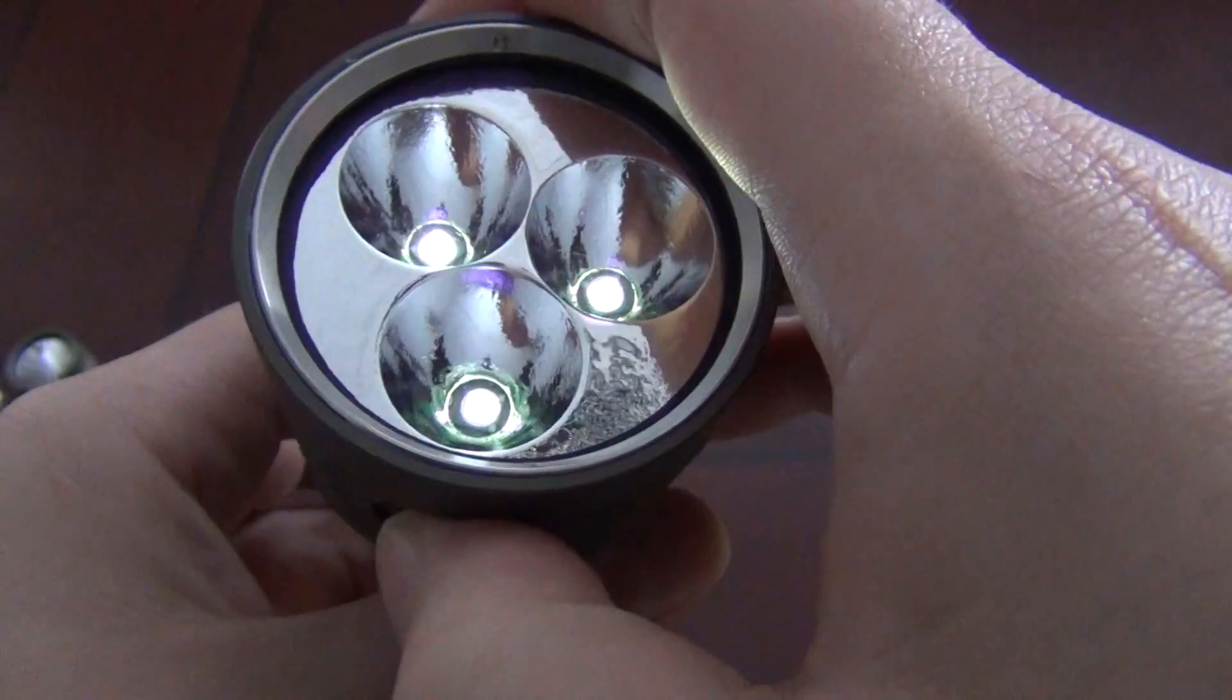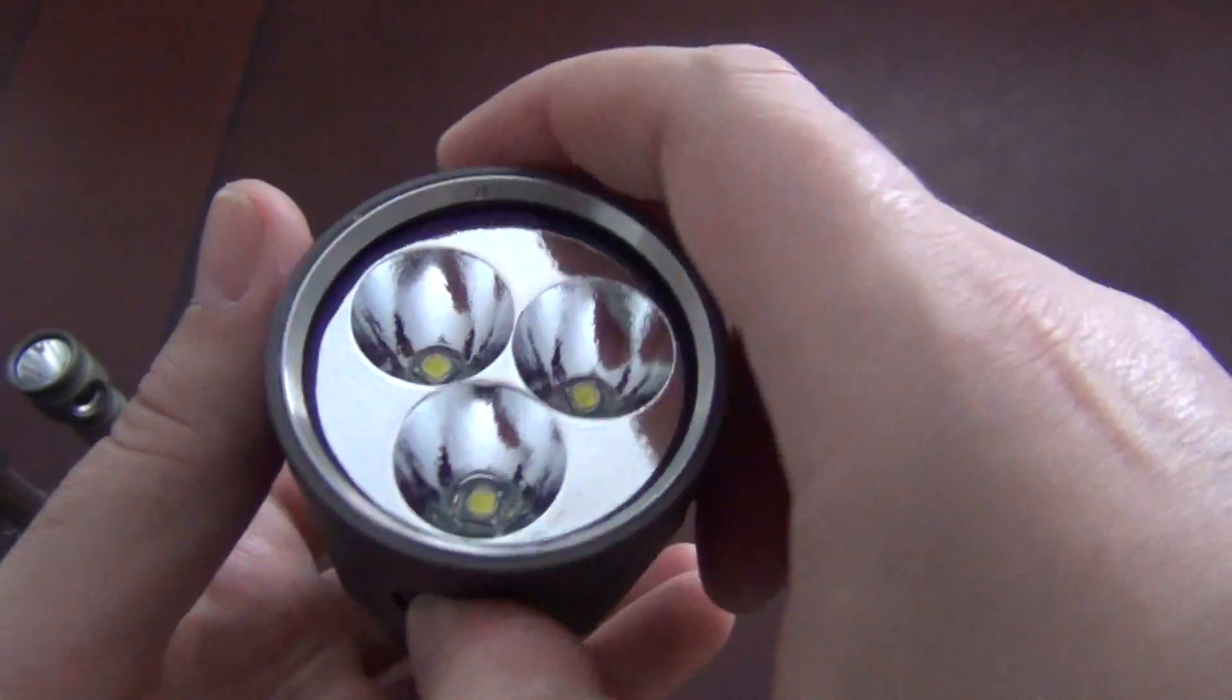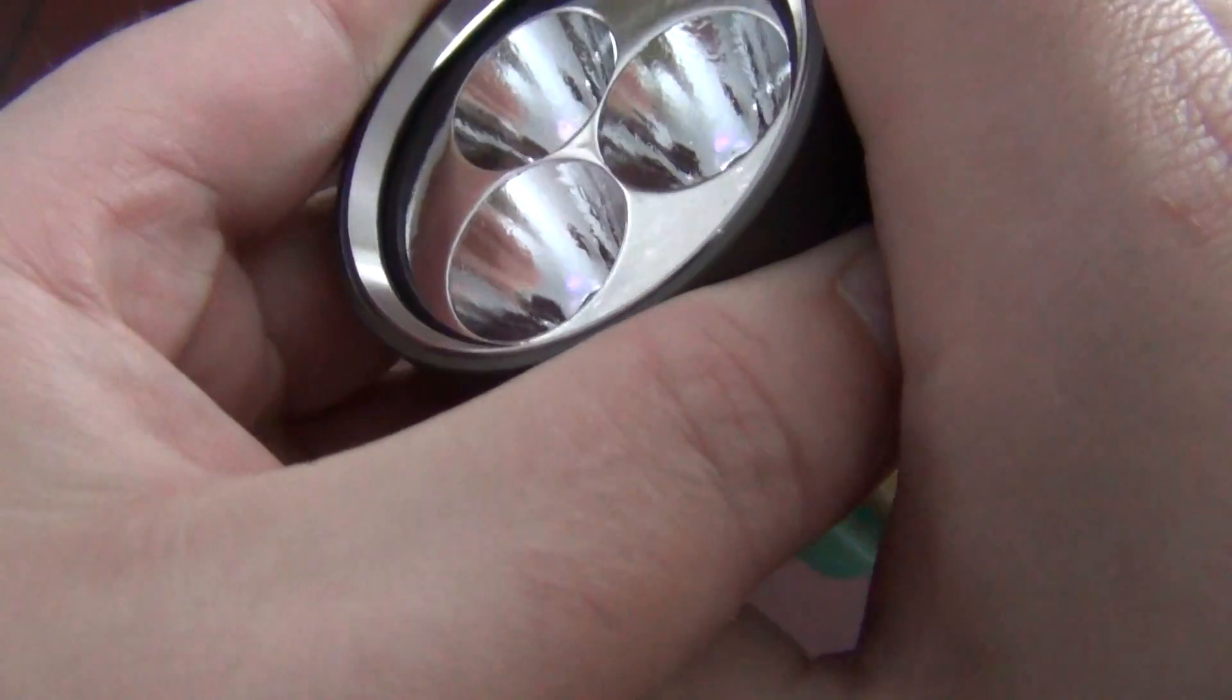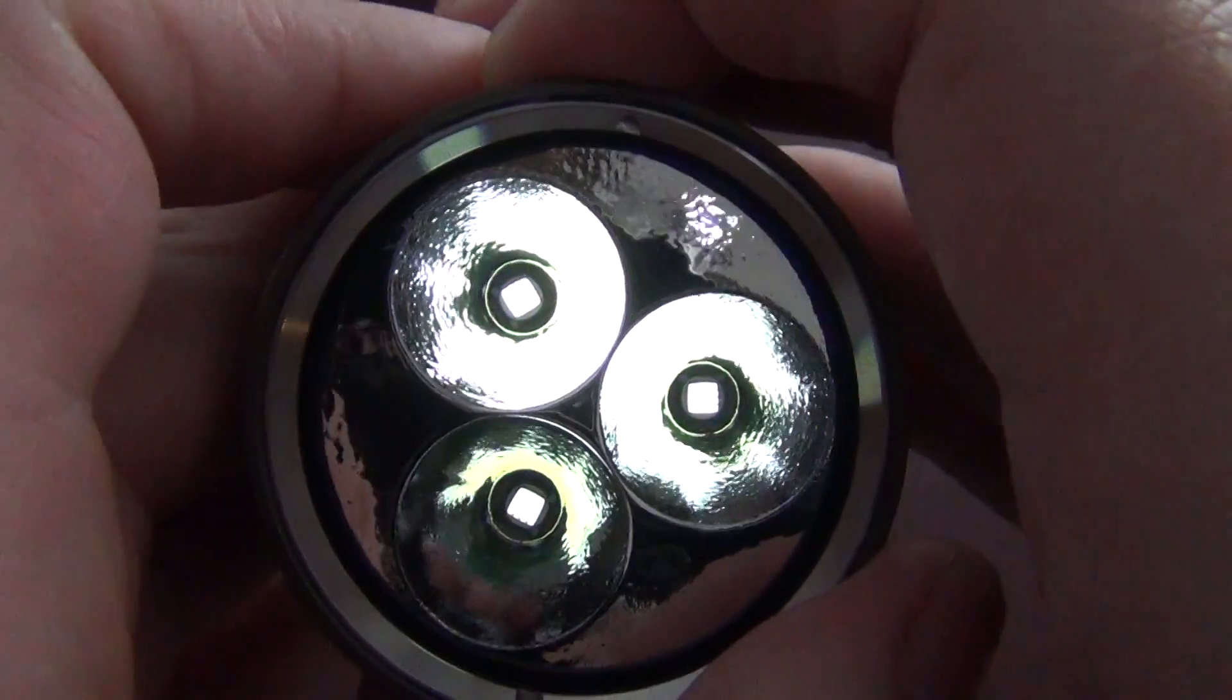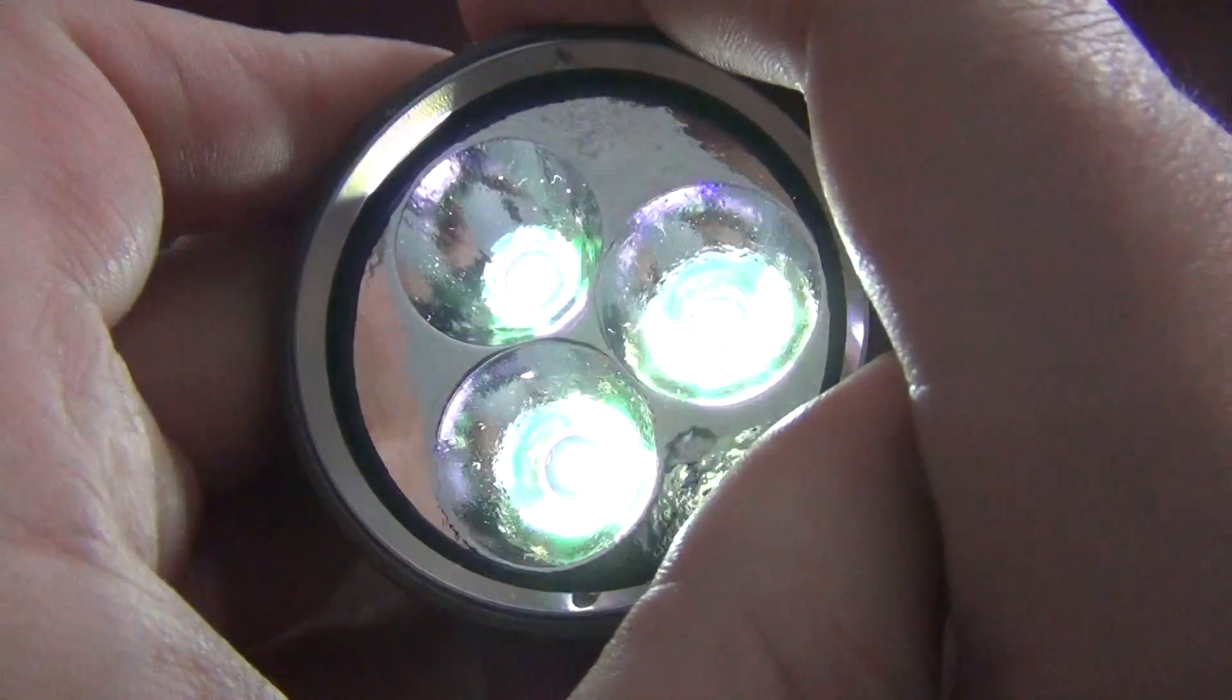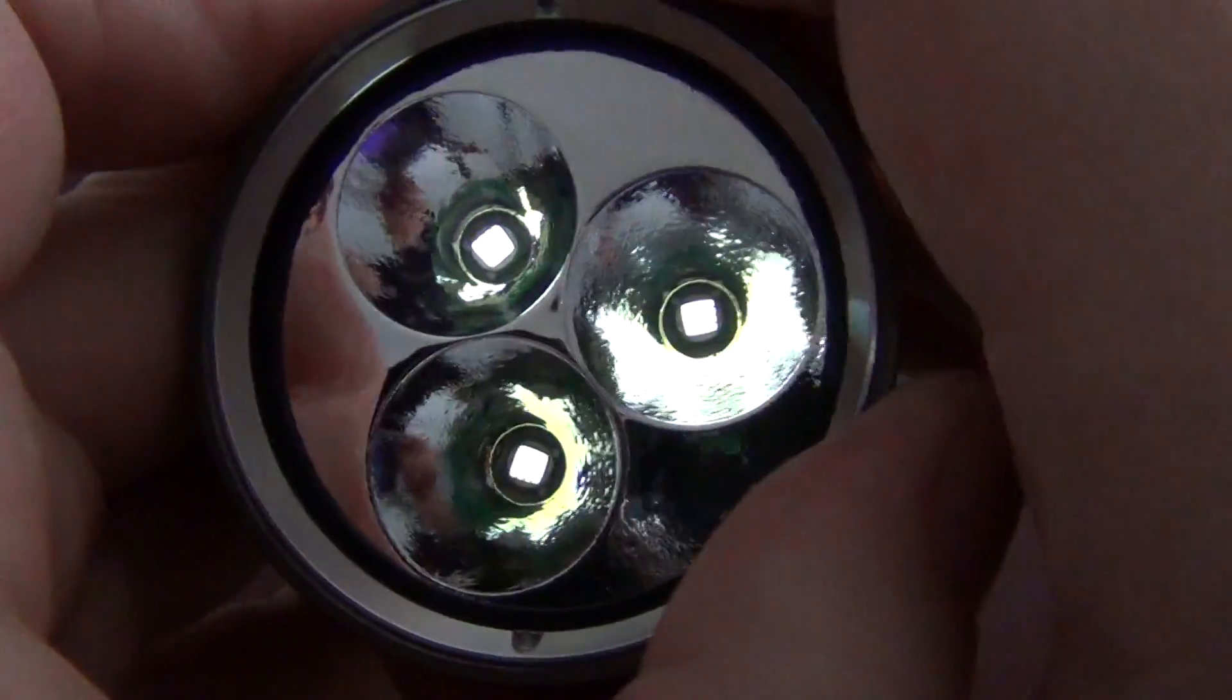There are three, like the SC52, there are three different low modes that you can pick. The lowest of which is incredibly low. And that's it right there. So those are the three selectable lows.